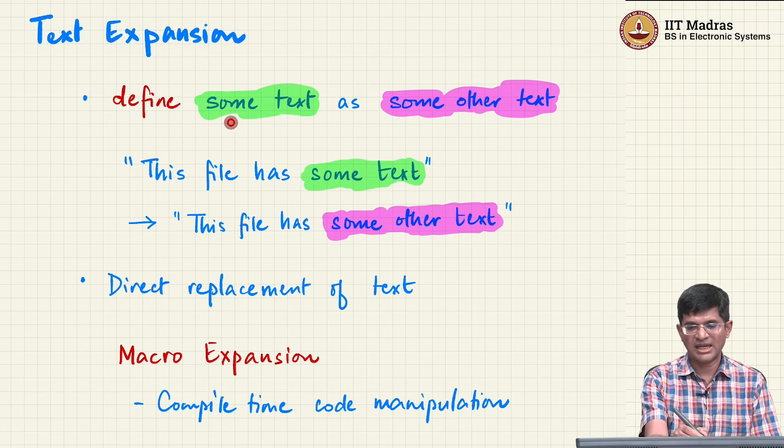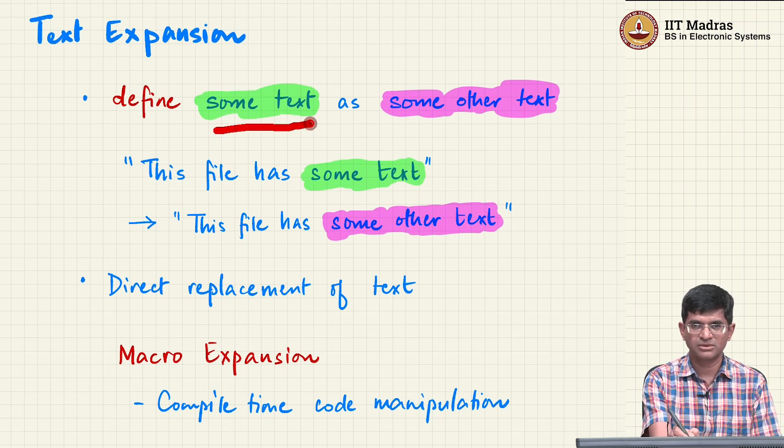When we say hash define and some text, of course I have highlighted it in green over here. In the real code, it would just be some text, a piece of text. Interestingly, that piece of text is not allowed to have a space in it, but for now I have just grouped this together and said that this is what I am trying to replace.